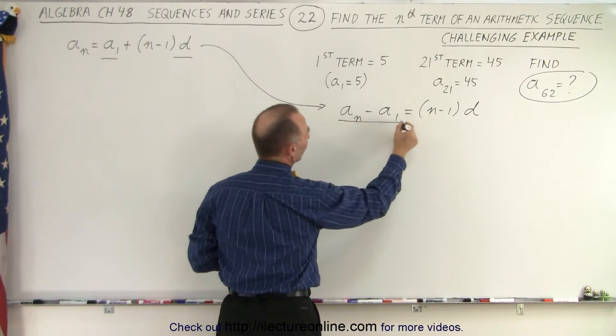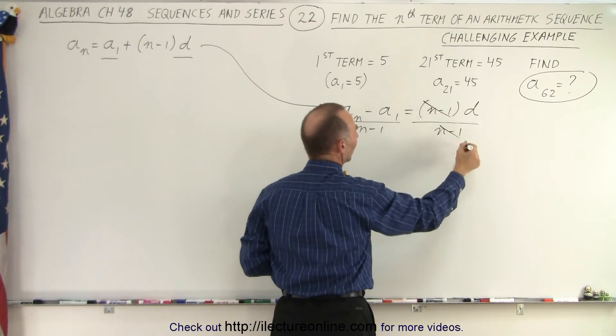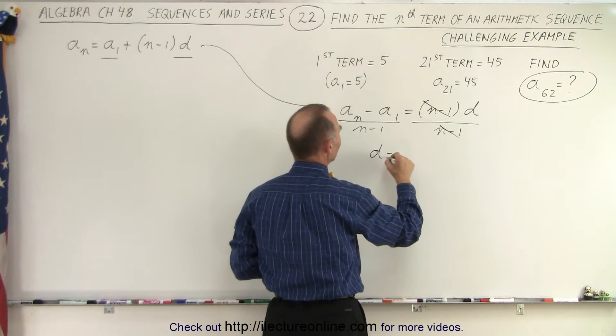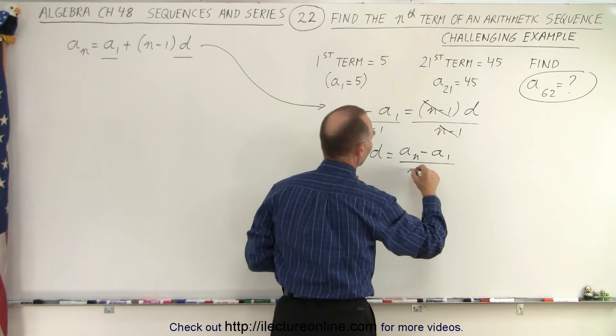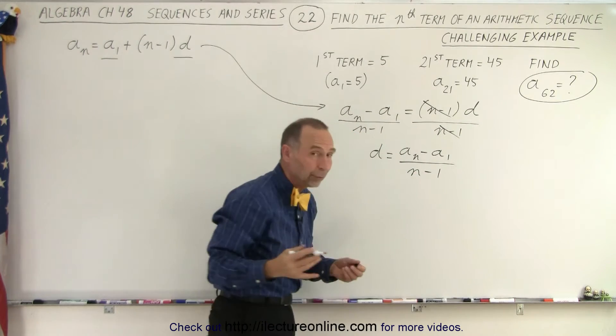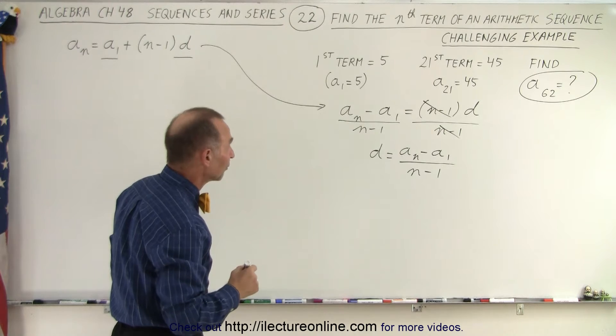Now we can divide both sides of the equation by N minus 1. These cancel out, and now we can see that D is equal to A sub N minus A sub 1 divided by N minus 1. So this is another way to find that difference between any two consecutive terms.